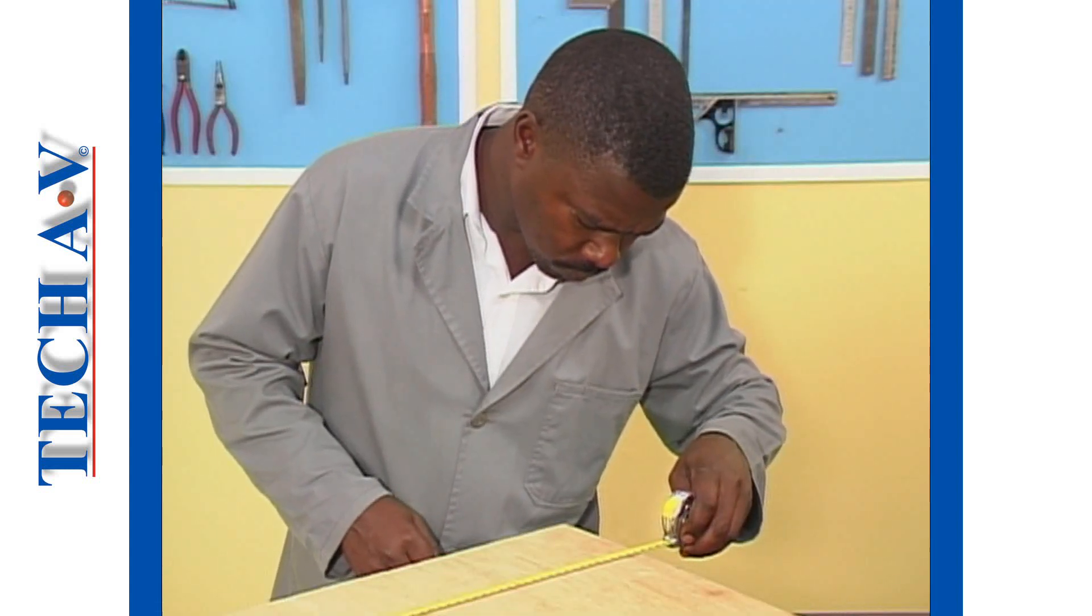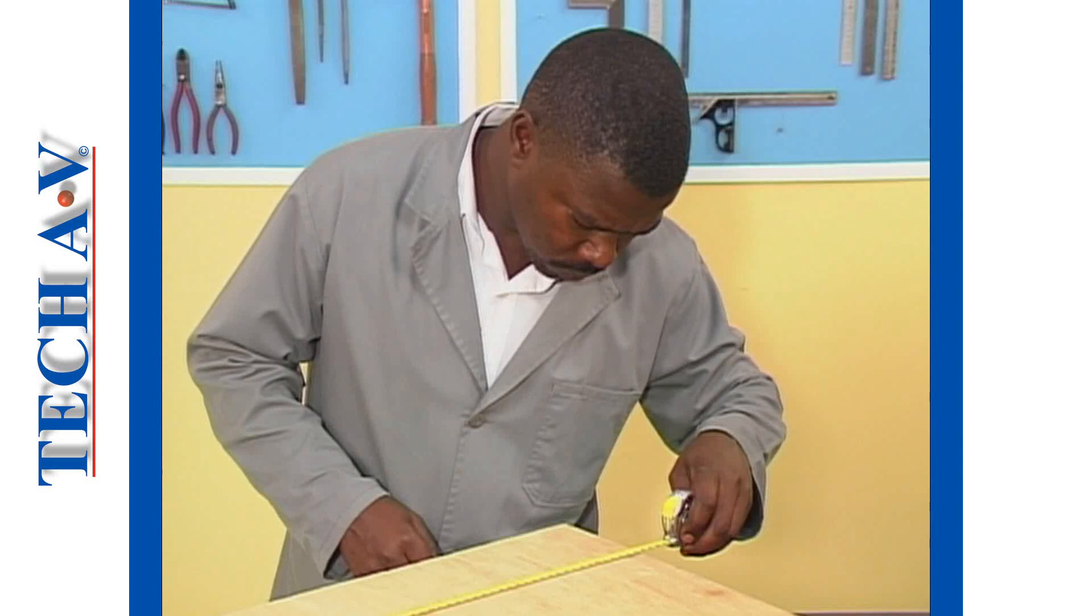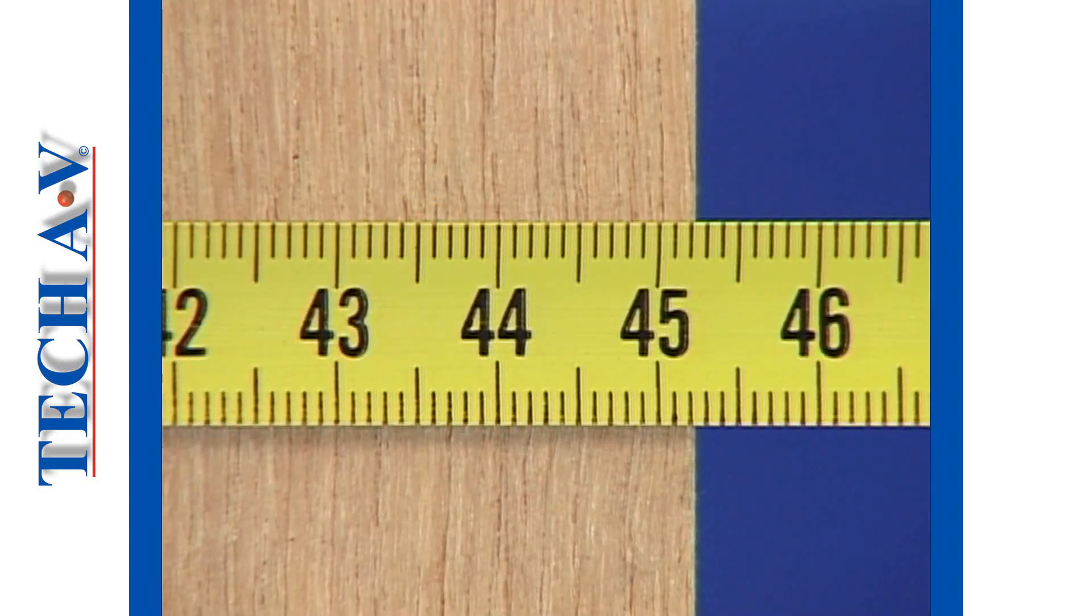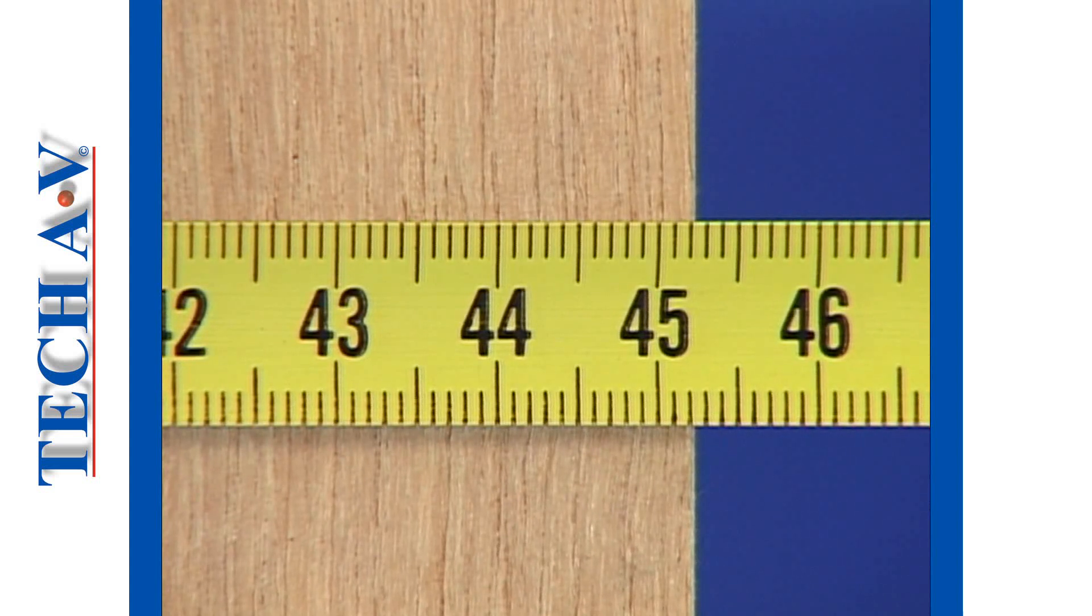We read the measurement by keeping our eye directly above the end of the workpiece. We then note which line on the tape lines up to the end of the workpiece and that is the reading.